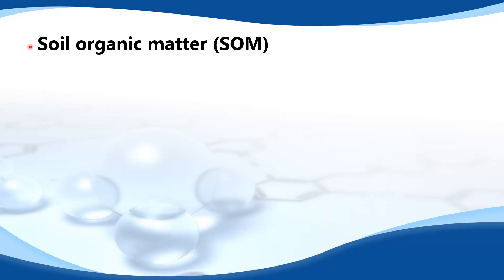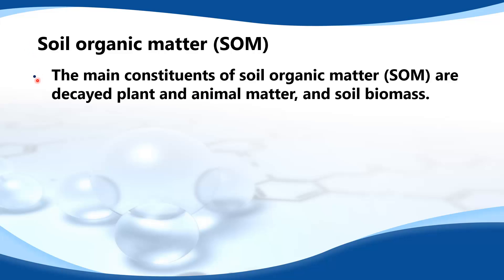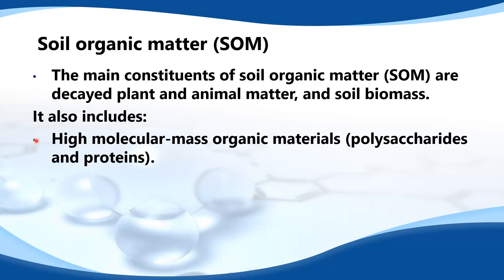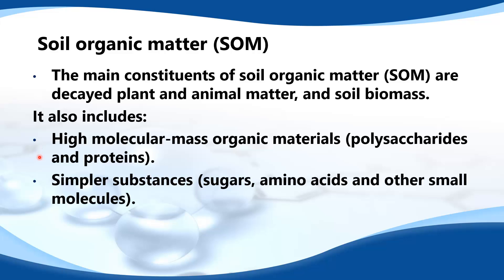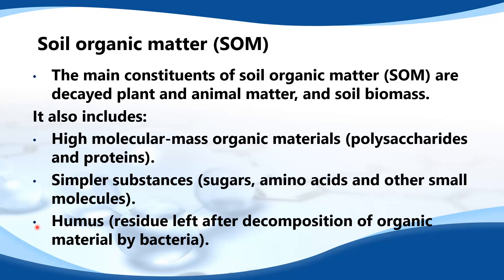Soil organic matter. The main constituents of soil organic matter are decayed plant and animal matter and soil biomass. It also includes high molecular mass organic materials such as polysaccharides and proteins, simpler substances such as sugars, amino acids and other small molecules. Humus is the residue left after the decomposition of organic material by bacteria.